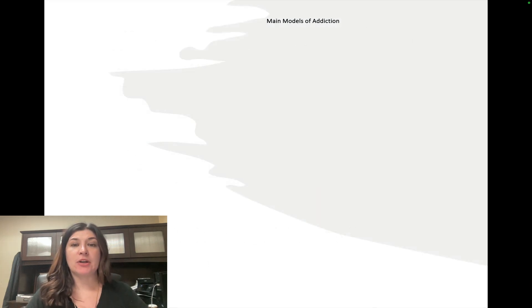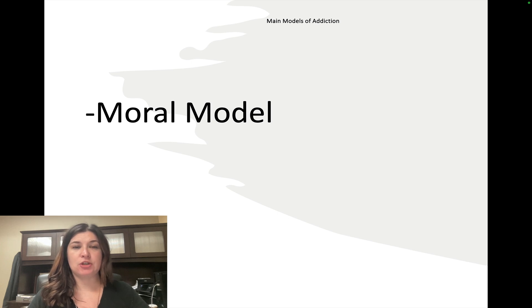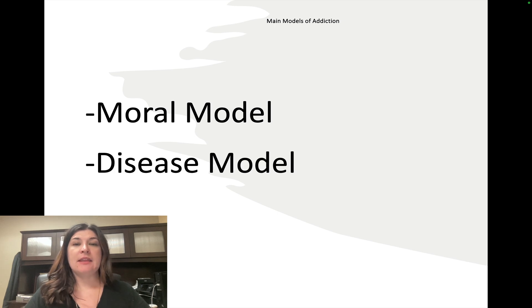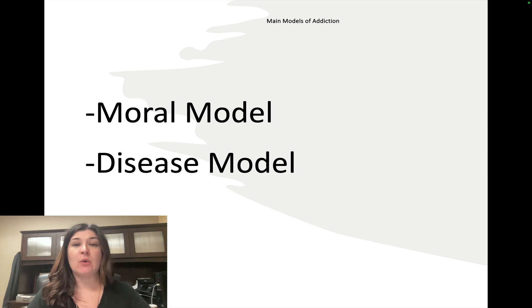Let's take a look at the main models of addiction and how we conceptualize addiction. One you've probably heard about is the moral model — those who have problems with alcohol or drugs have some kind of moral failing, or some people might see it as a spiritual malady. Then there's the disease model: the idea that addiction is a disease of the brain. While some people have a choice to drink, they don't have a choice to crave, which is what makes it a disease.